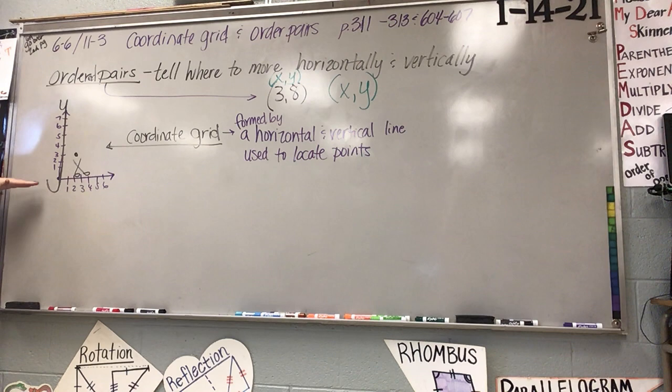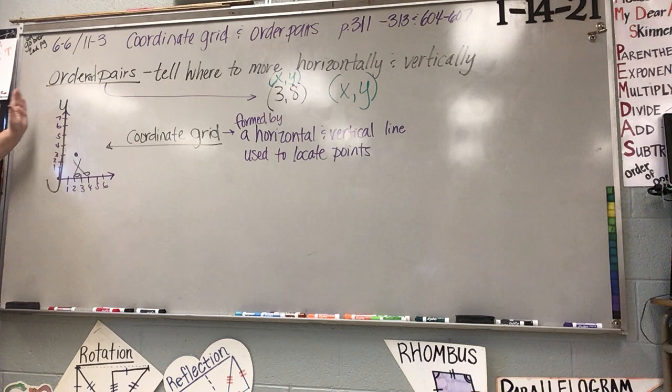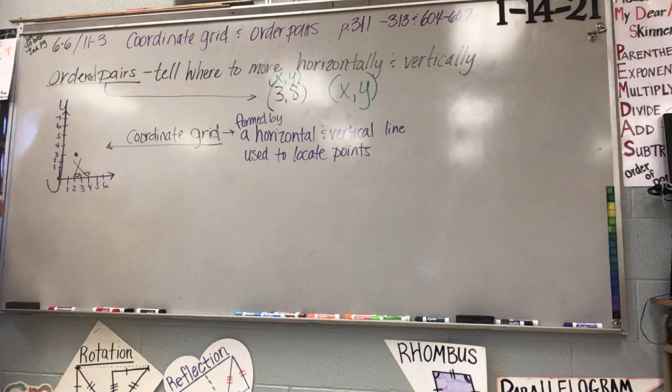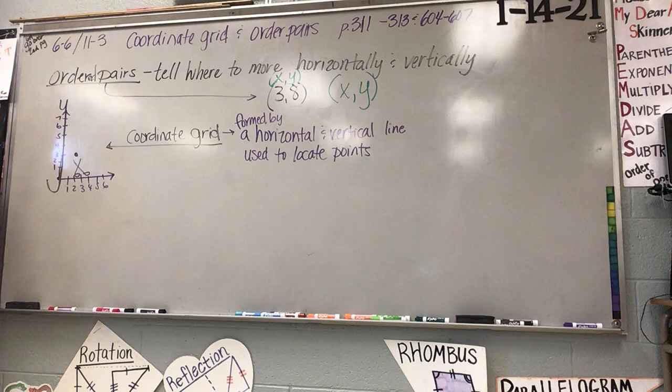You have your Y axis. You have your X axis. Coordinate grids are going to have a vertical line and a horizontal line. Ordered pairs. Just on this one, because I'm fixing to put grid on the board and we're going to work them out.